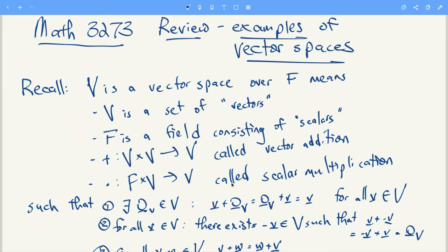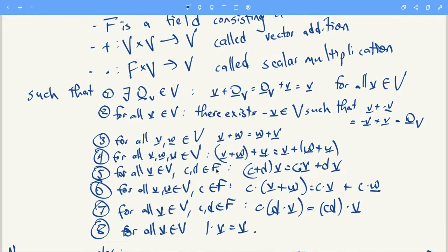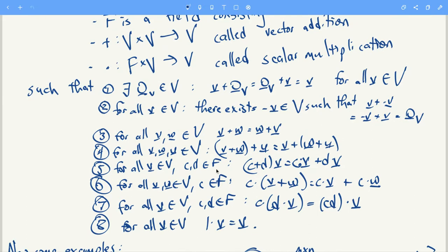So vector addition and scalar multiplication, and it satisfies these eight properties. Let me just try and summarize. There is a zero vector, or in other words the additive identity for V. For each V there's an additive inverse, so negative.